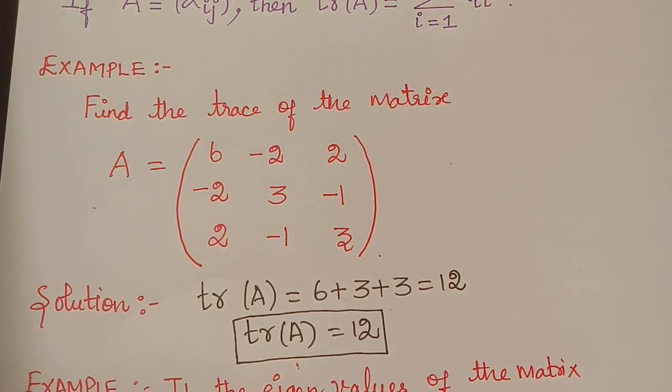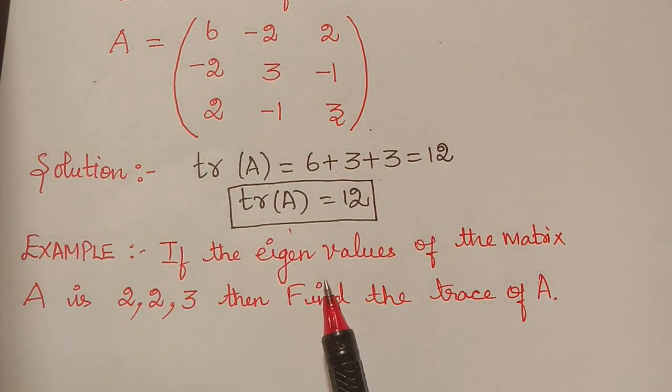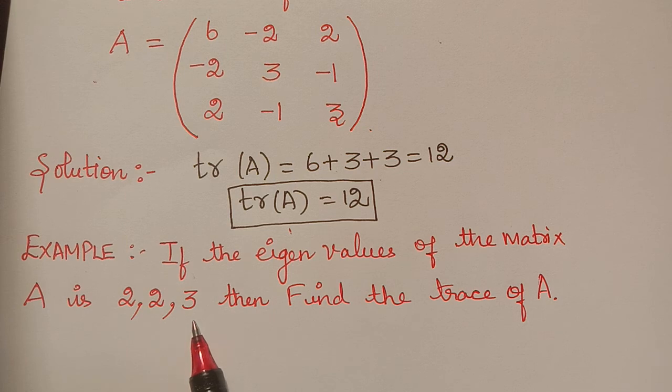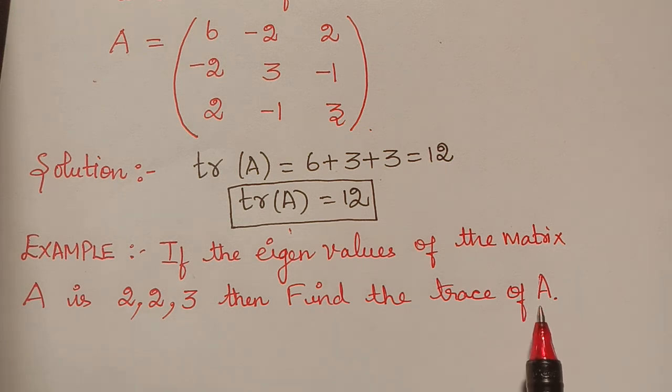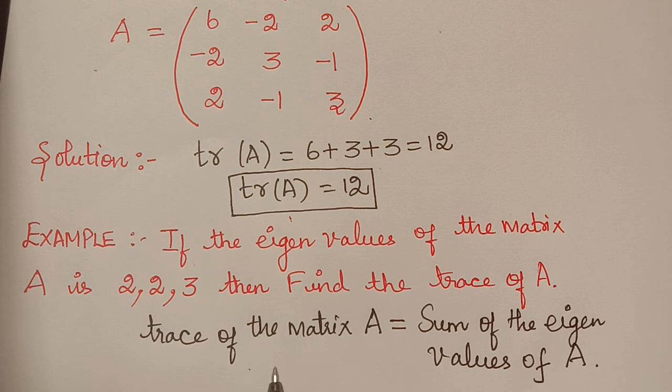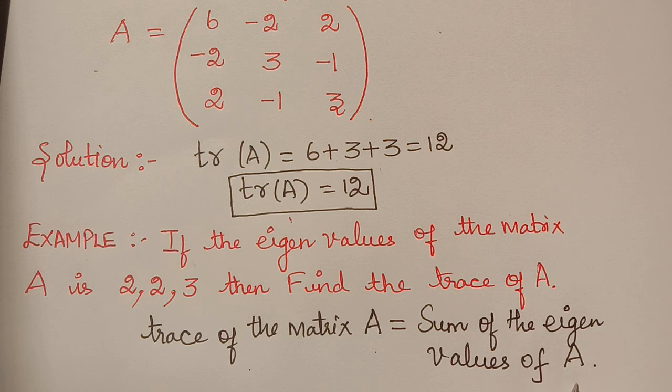For example, if the eigenvalues of the matrix A are 2, 2, 3, then find the trace of the matrix A. As I told you, the trace of a matrix A is equal to the sum of all the eigenvalues of capital A.